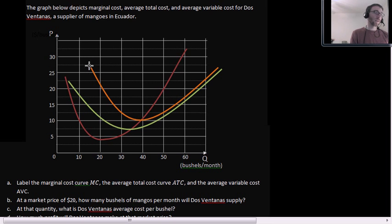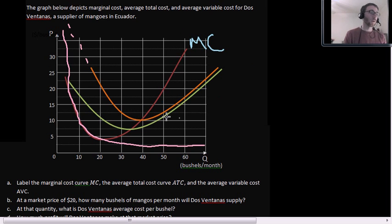Average total cost starts high because of the fixed costs. That's going down at first because fixed costs are declining as well as variable costs. Average variable costs will always be less than average total cost because the average total costs incorporates both the average variable costs and average fixed costs, which are not visible on this graph.